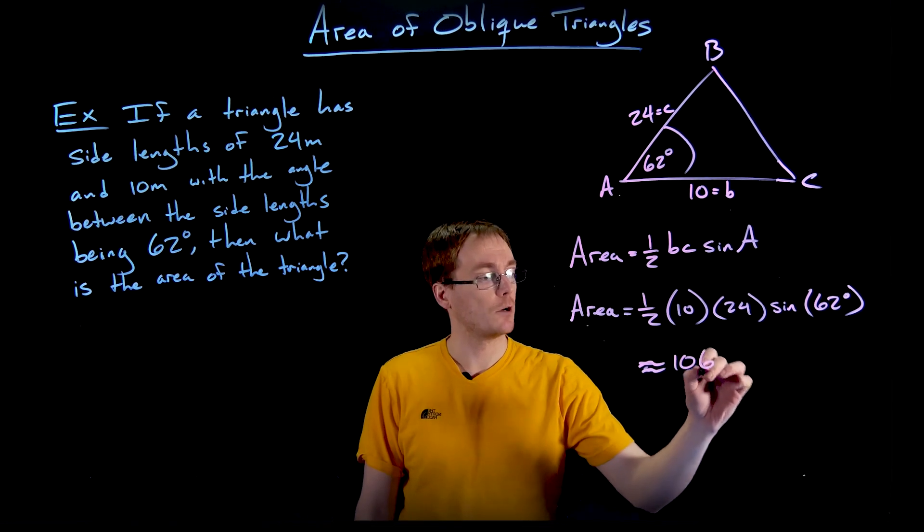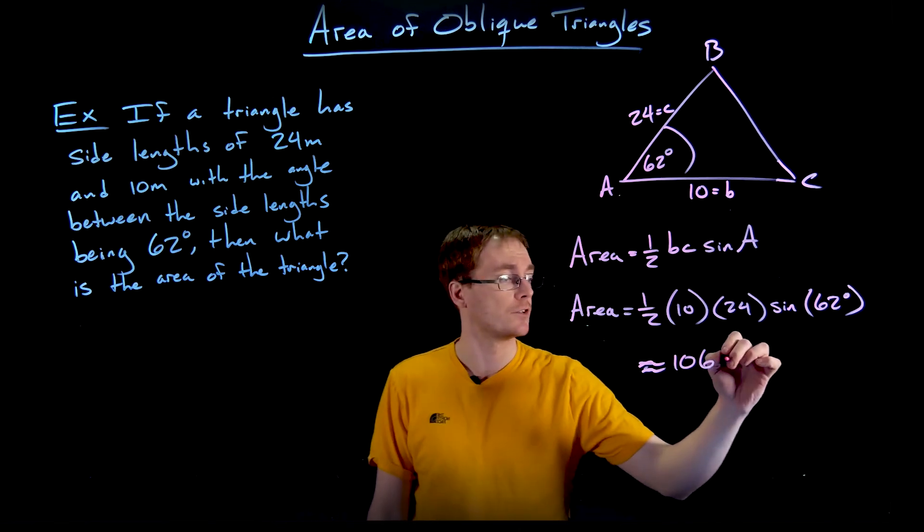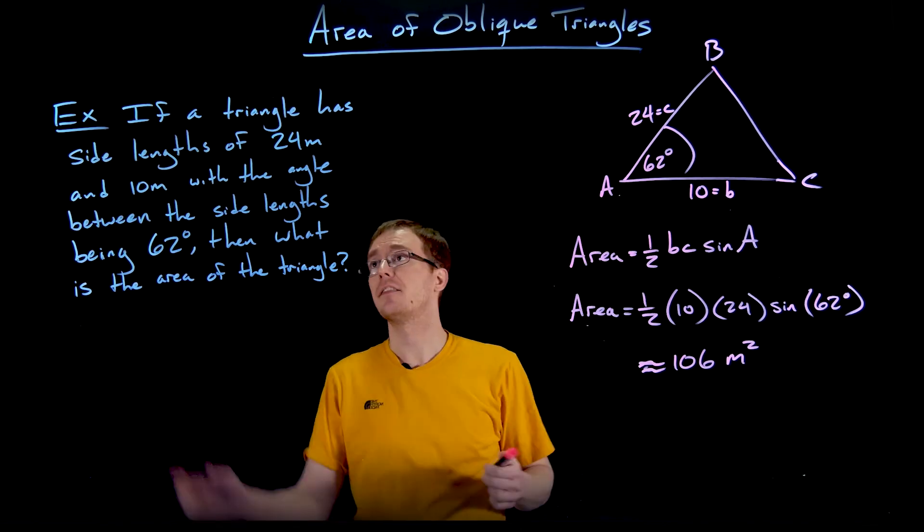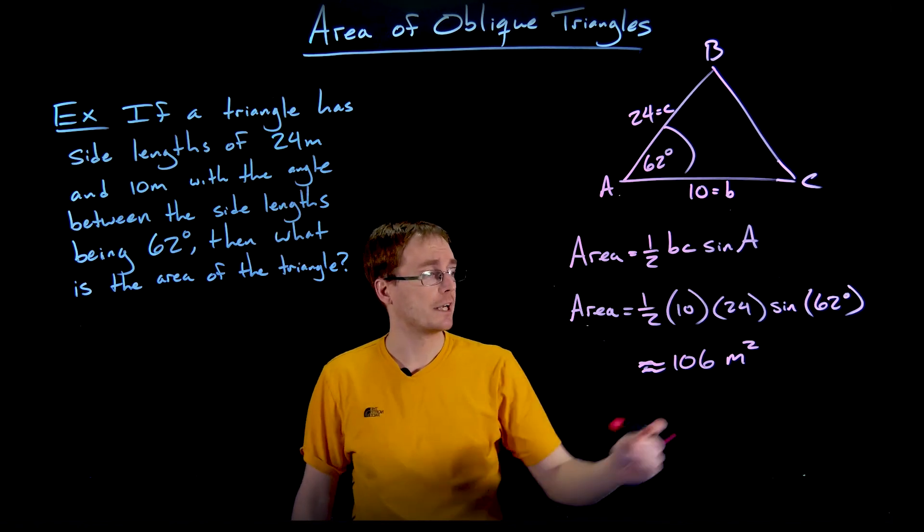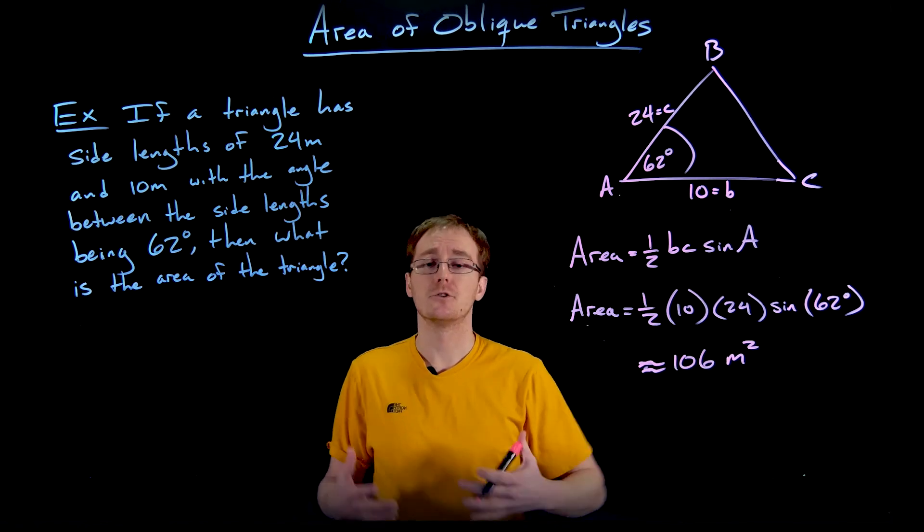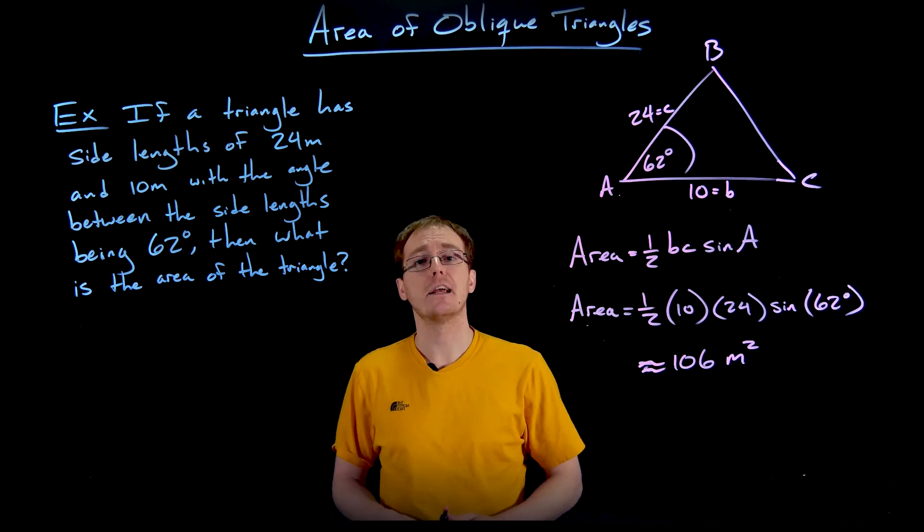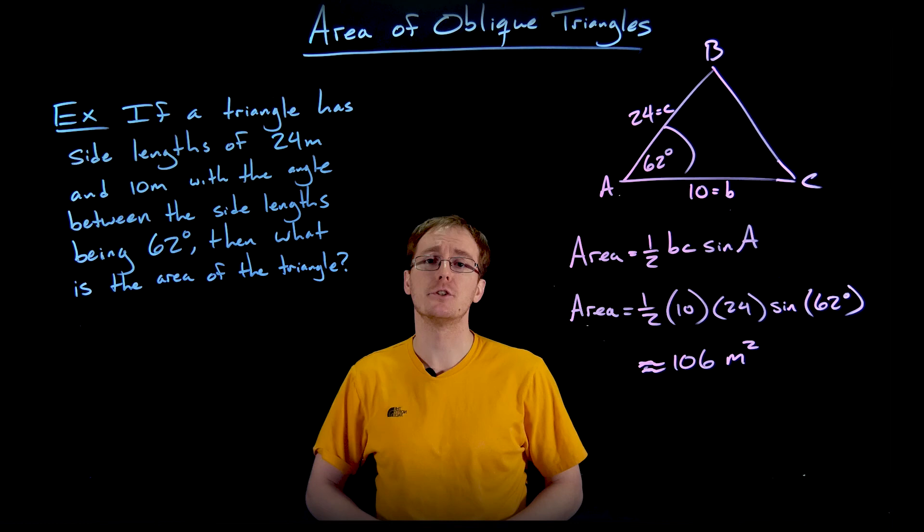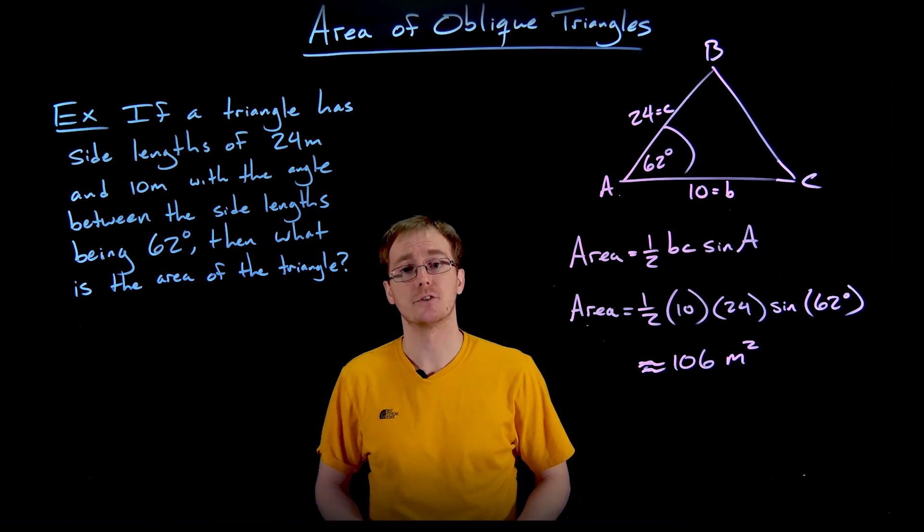So that is the area here, and let's not forget our units. The units for the side lengths were meters, so our area is going to have to be meters squared. So real quick and easy, we can find the area of an oblique triangle using our new formula. We just have to know two side lengths and the angle between those two side lengths.